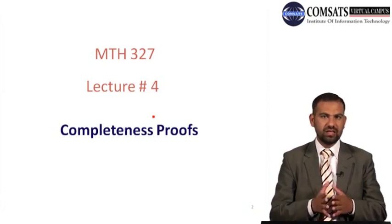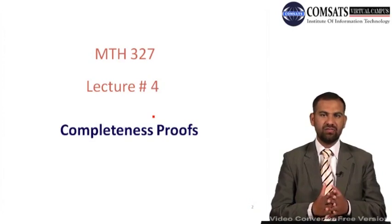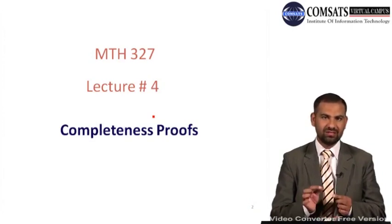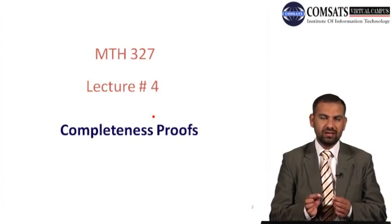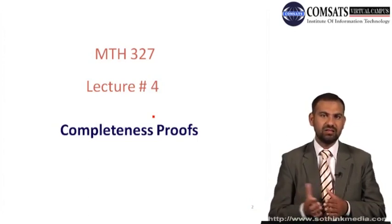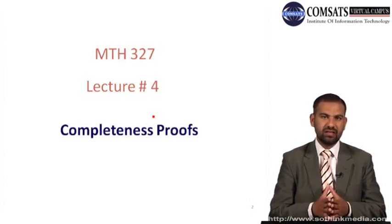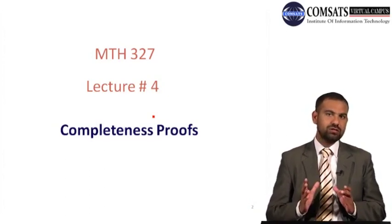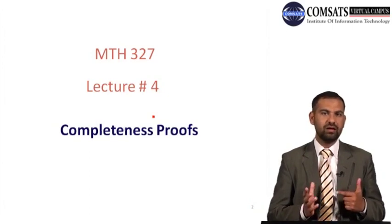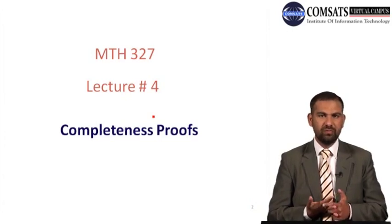We saw in the last lecture that a sequence x_n will converge if for every epsilon positive there exists a natural number N such that d(x_n, x) < epsilon for all n greater than or equal to N. After this we studied the Cauchy sequence, and we saw that the limit of a convergent sequence is unique.